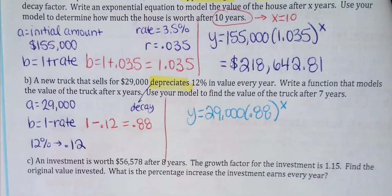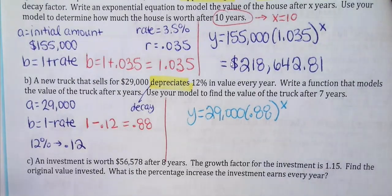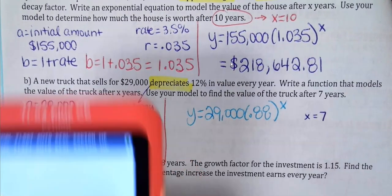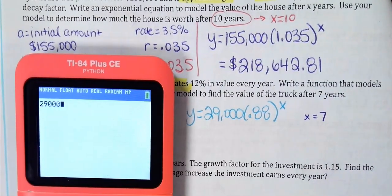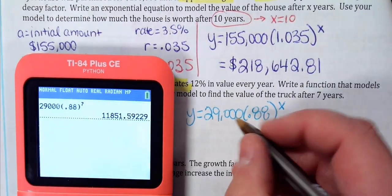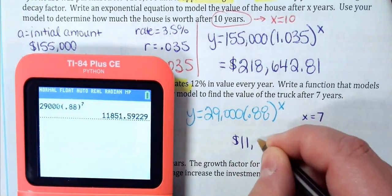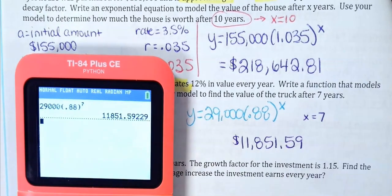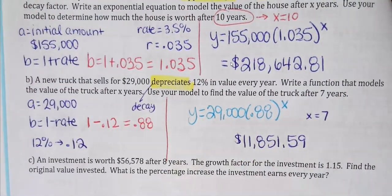If you want to know what the truck is worth after 7 years, plug in x equals 7. Calculate 29,000 times 0.88 to the seventh power. Talking about money, so go two decimal places. After seven years the truck is worth $11,851.59.